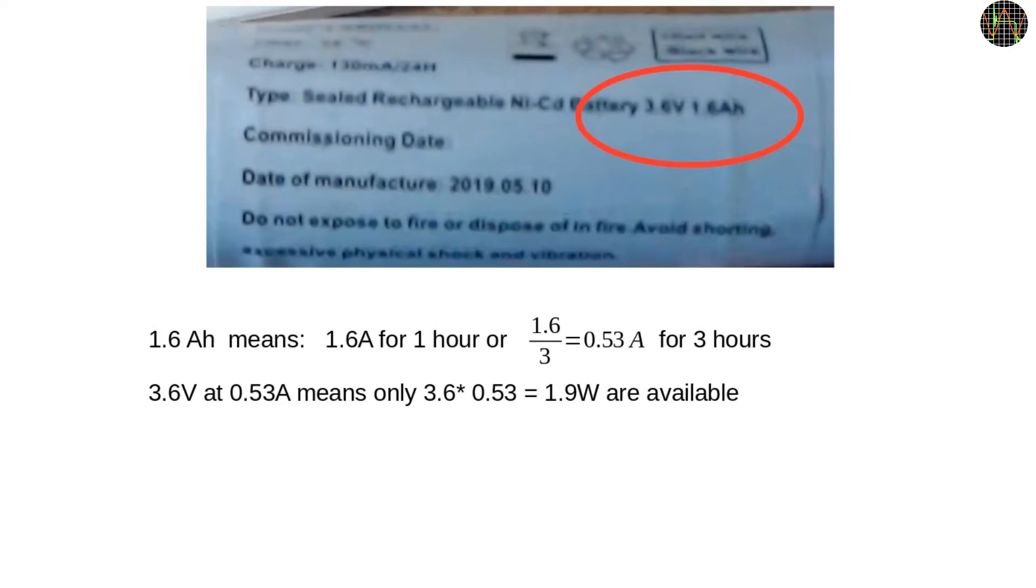Besides the battery chemistry, there is something odd about the battery data. This one here delivers 3.6V and has a capacity of 1.6Ah. Yet the light is supposed to stay on for at least 3 hours. How does this work with the 4W LED light? 1.6Ah means we can get 1.6A for 1 hour or 0.53A for 3 hours. At 3.6V and 0.53A, the battery can at best deliver 1.9W. Maybe they mean 4W when mains is available and less when on battery. Let's find out.